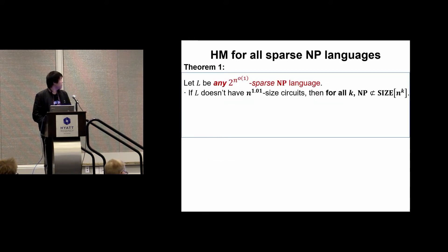Here is the statement of our main theorem. Let L be any sub-exponentially sparse NP language. If L doesn't have n^1.01 size circuits, then for all k, NP doesn't have n^k size circuits.